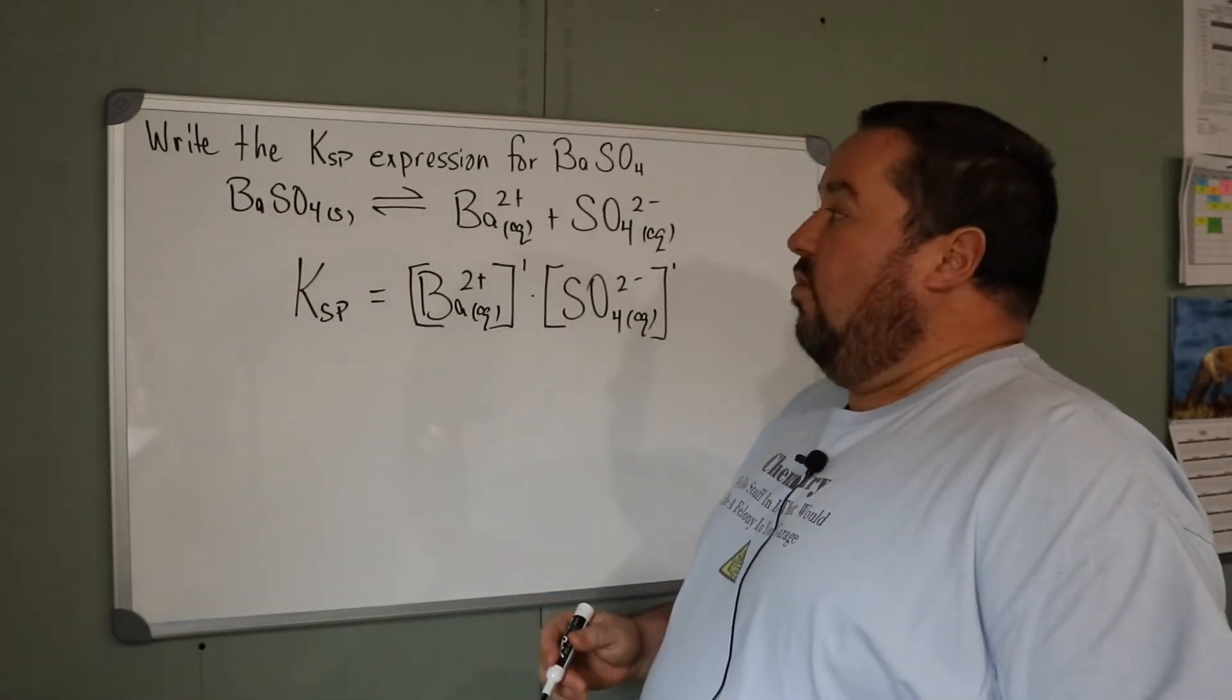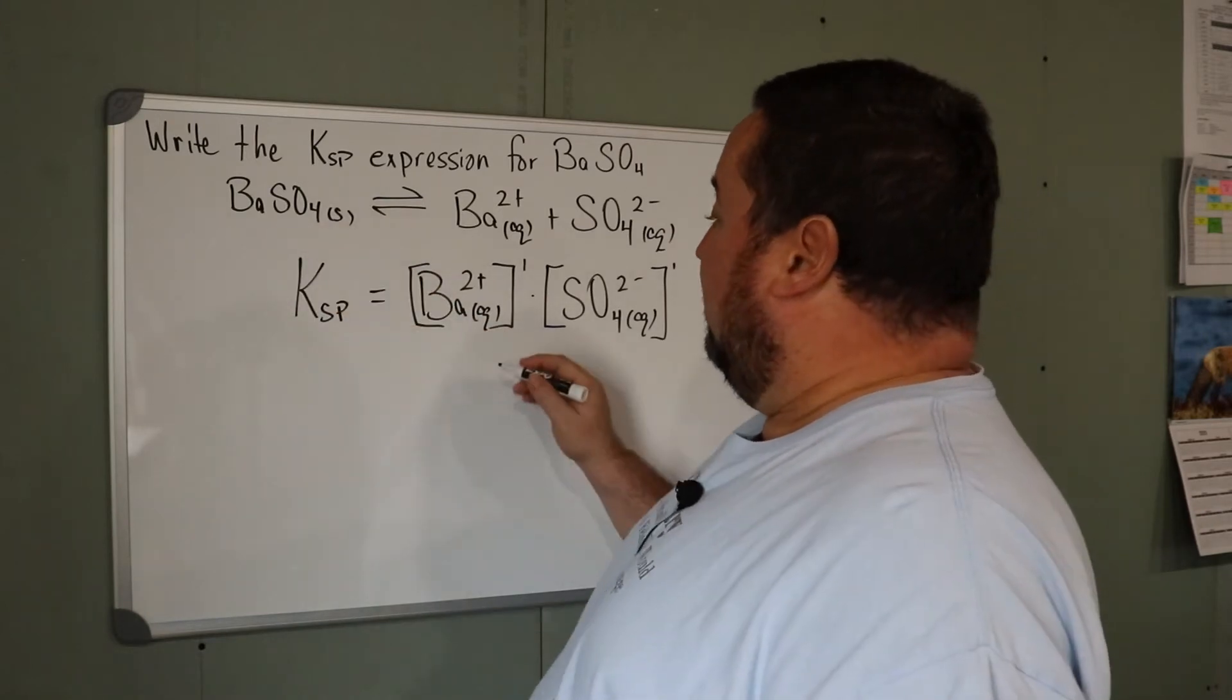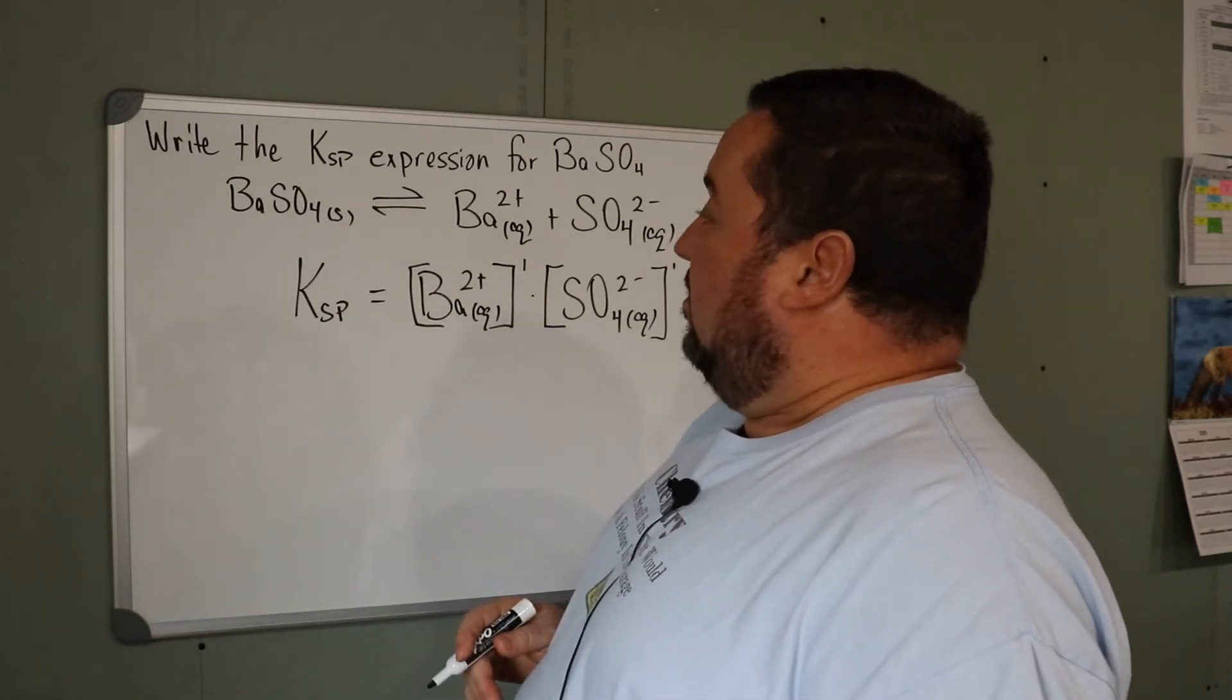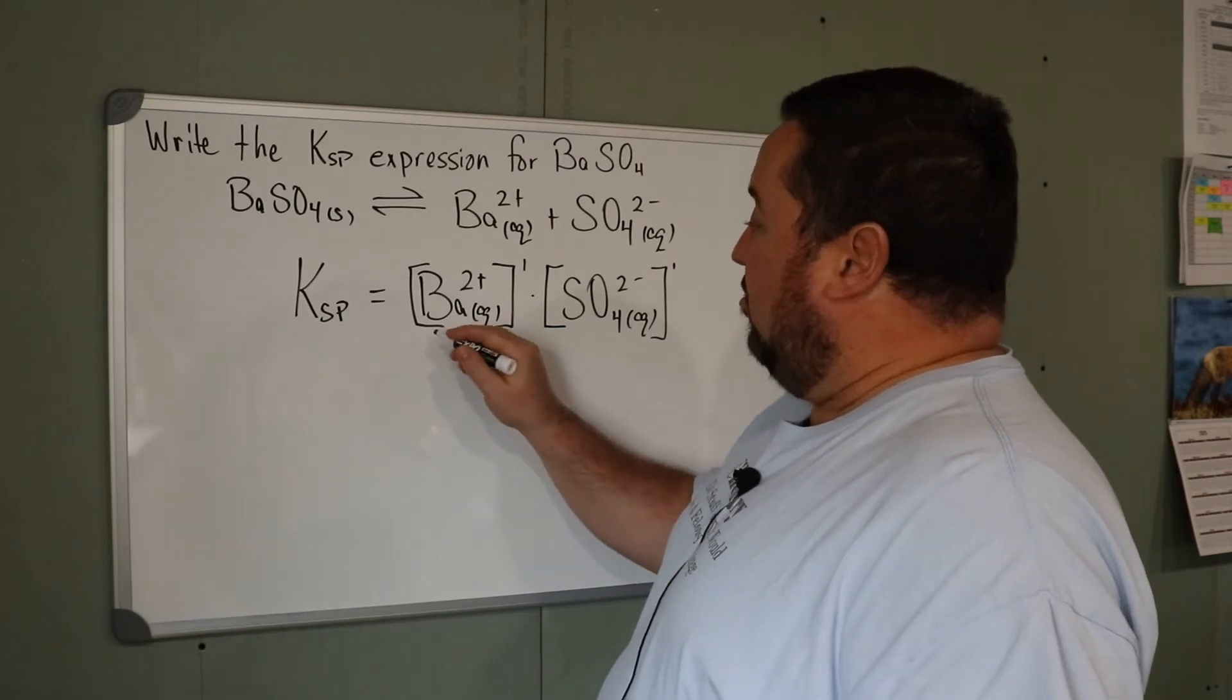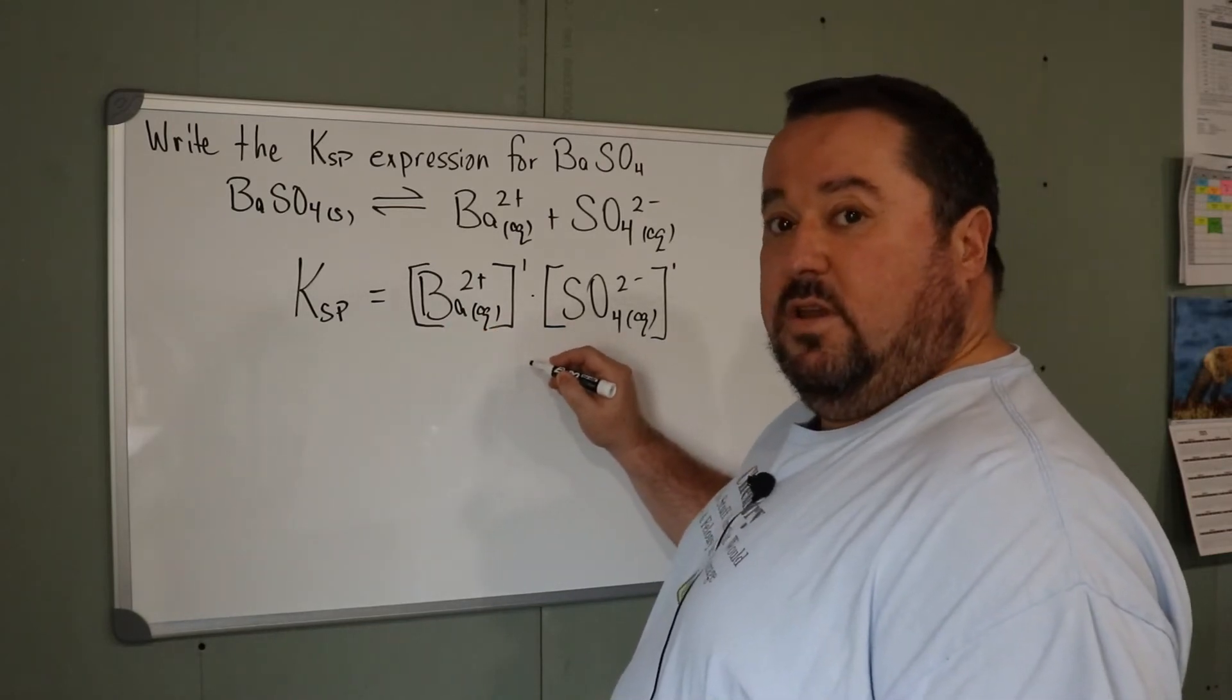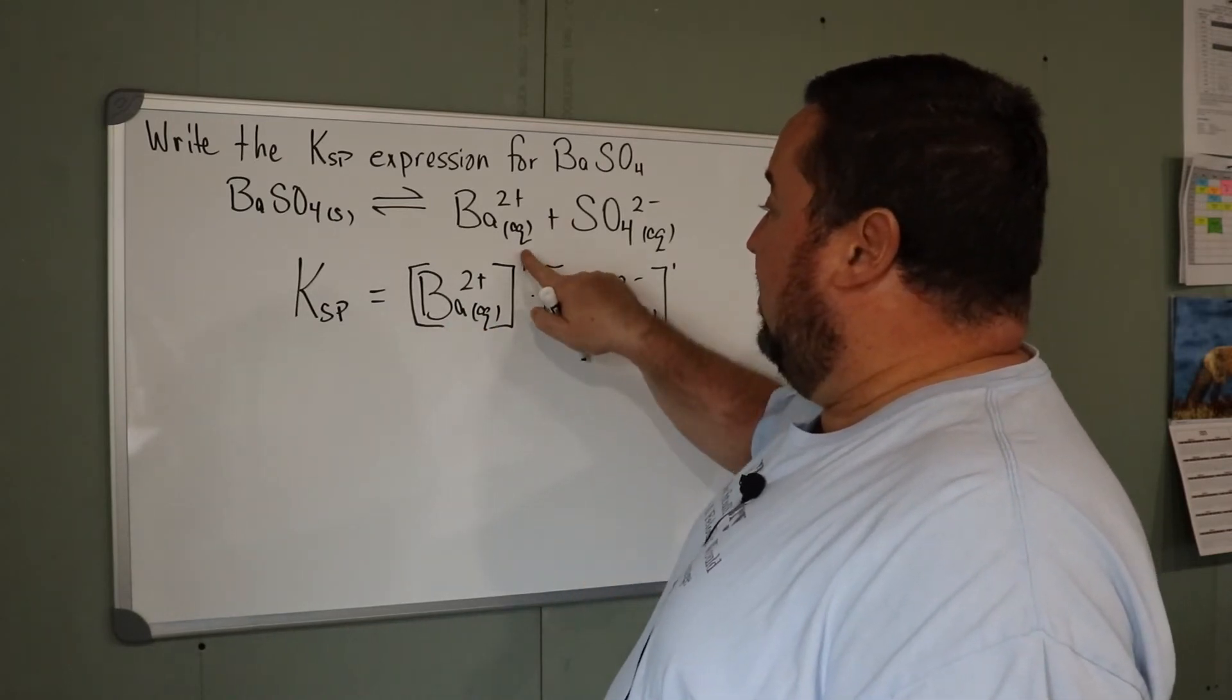On the reactant side, we have only a solid, and solids and liquids don't get included in the equilibrium constant expression. So I could divide the whole thing by one, but I'm not going to because I don't need to. There's my equilibrium constant for barium sulfate.